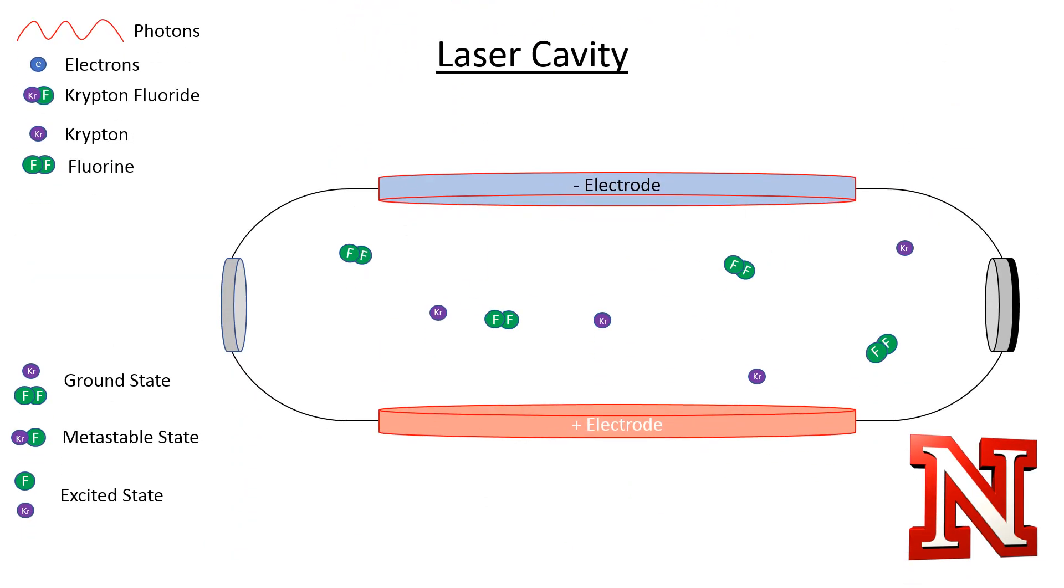The PLD system uses a laser known as a KrF excimer laser. This means that it uses the krypton fluoride gas molecule to power the laser. This is an ultraviolet laser that operates at 248 nanometer wavelengths. As humans, we can see between 400 and 800 nanometer wavelengths, so we cannot see this laser.